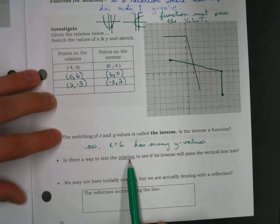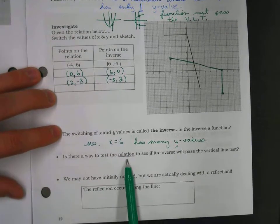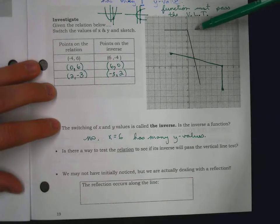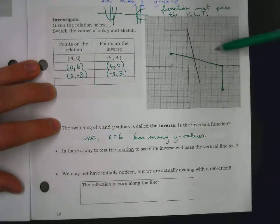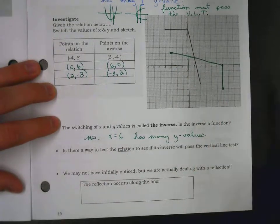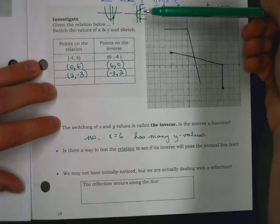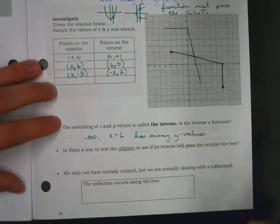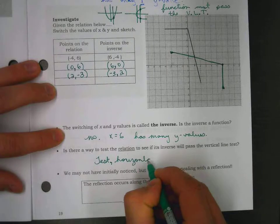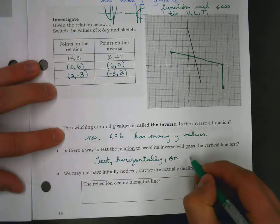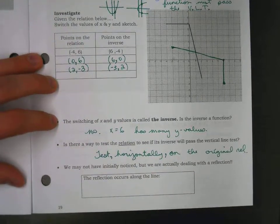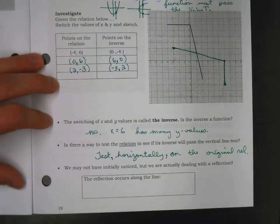Is there a way to test the original relation to see if its inverse will pass the vertical line test? Before we flip it, we can test horizontally — a horizontal line test. Because when we flip the graph, the horizontal line test becomes a vertical line test. So if your original function passes a horizontal line test, its inverse will pass a vertical line test.